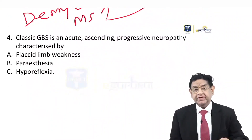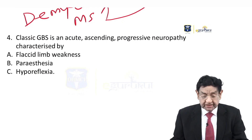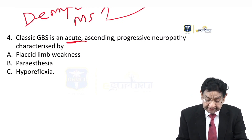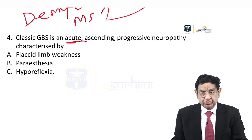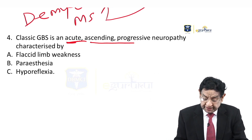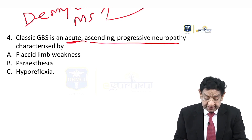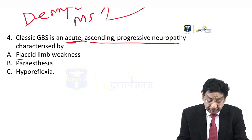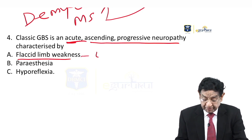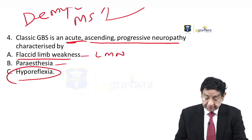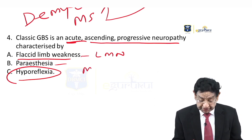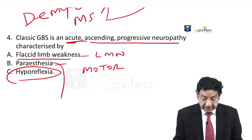As far as classical GBS is concerned, it is mainly the peripheral nervous system. It is an acute onset — like in this case, the patient has a short history of only two weeks. It presents as ascending progressive neuropathy. The features of neuropathy are flaccid limb weakness, which is a type of lower motor neuron palsy, along with paresthesia and hyporeflexia — reflexes are diminished. It is mainly a motor disorder; sensory features are minimal.